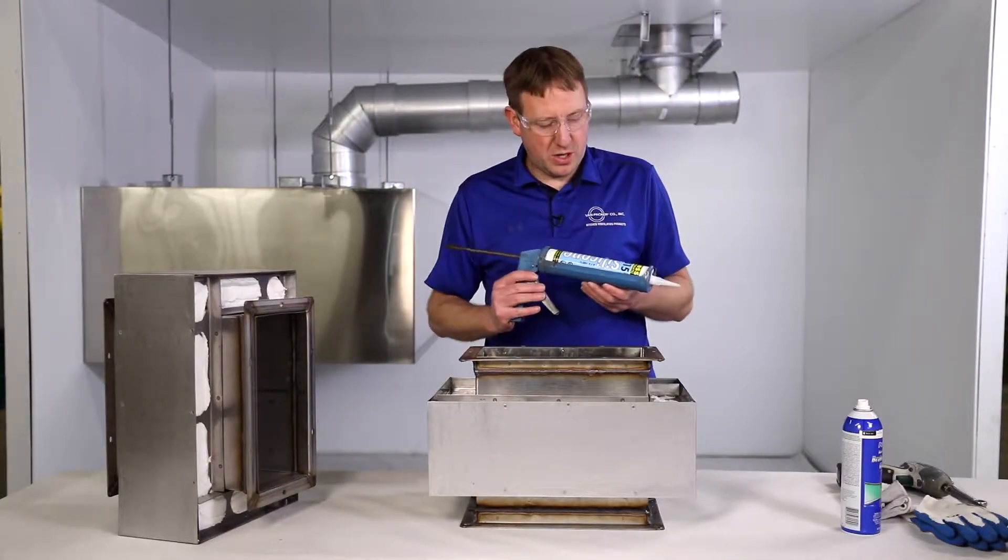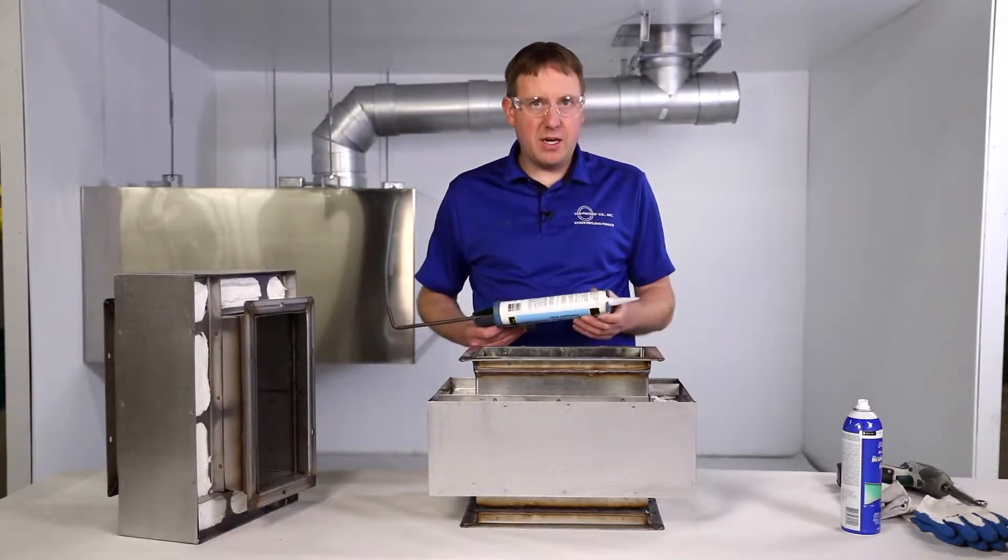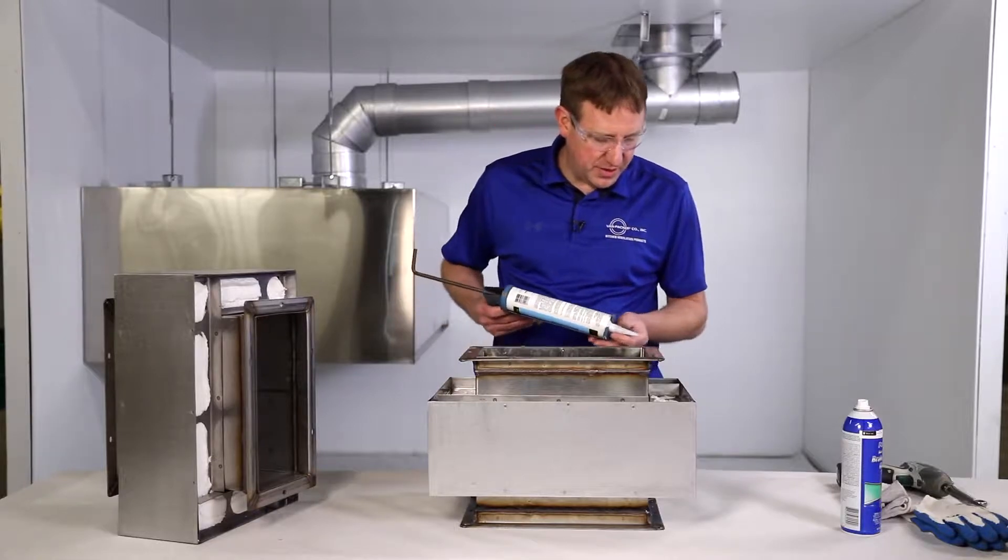Second thing we're going to do is put our Boss silicone sealant around the flange. We recommend about an eighth to a quarter inch bead of sealant all the way around.